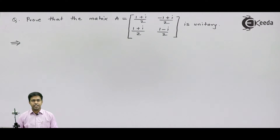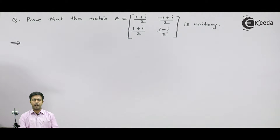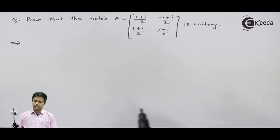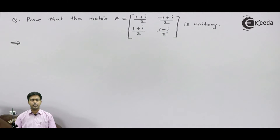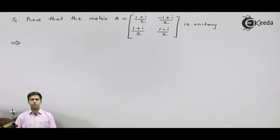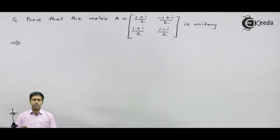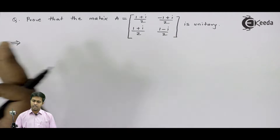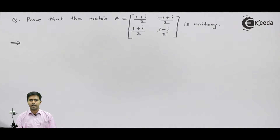Hi friends. In this problem, we have to prove that the matrix A is a unitary matrix. We all know the condition for unitary matrix: the product of A and A-theta, that is the transpose conjugate of A, if it is equal to the identity matrix I, then we say that the given matrix A is unitary. So here we will find out the product, and if we get the product as the identity matrix, then it is proved that the given matrix is unitary.